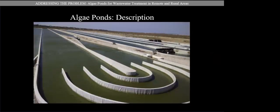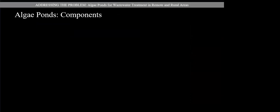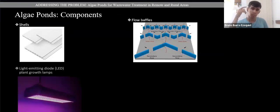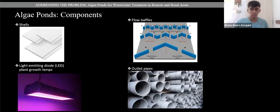Algae ponds are the solution we have proposed. It is an algae pond that will be responsible for water treatment. The algae absorb harmful nutrients from the water, and the water that comes out is cleaner compared to what comes in. The materials necessary to design algae ponds are PVC yields, PVC flow baffles, inverted L-shaped fittings, light-emitting or plant-grow lamps, and outlet pipes made of PVC.